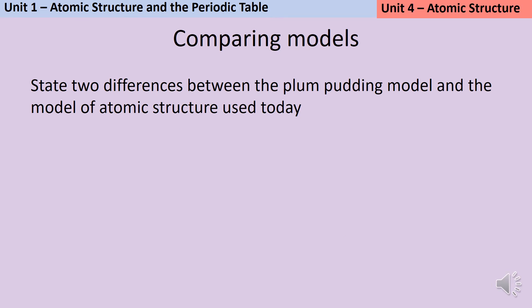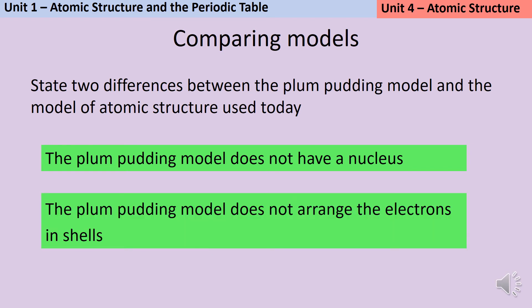You could be asked in your GCSE exam to compare the plum pudding model with the nuclear model we use today. The two key differences are that the plum pudding model doesn't have a nucleus and it doesn't have any shells—instead the electrons are embedded inside the atom.